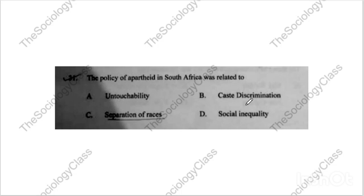Question thirty: 'Assembly line is associated with what?' This question has also been repeated — the correct answer is factory. I had explained this with a diagram in previous papers. Question thirty-one: 'The policy of apartheid in South Africa was related to...' The correct answer is C — separation of races.